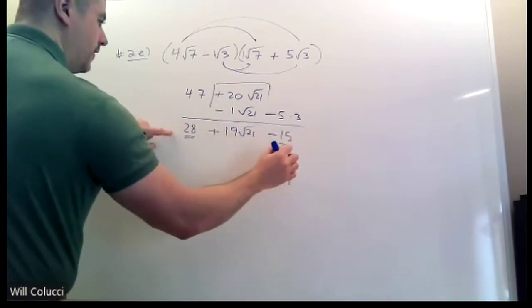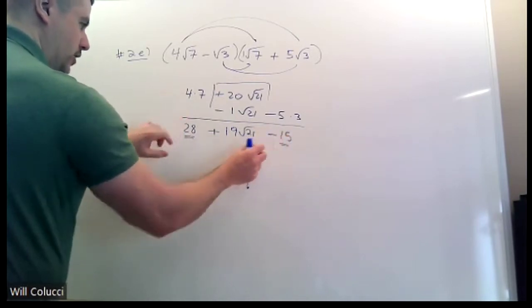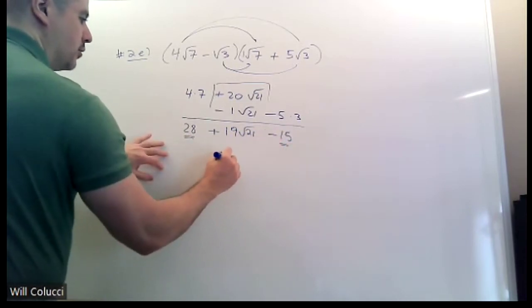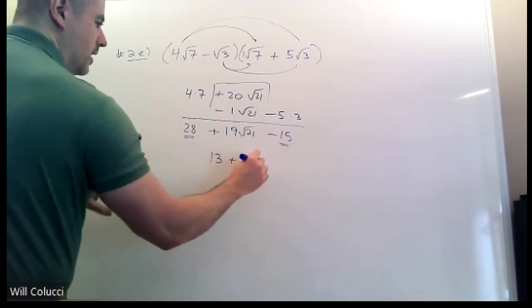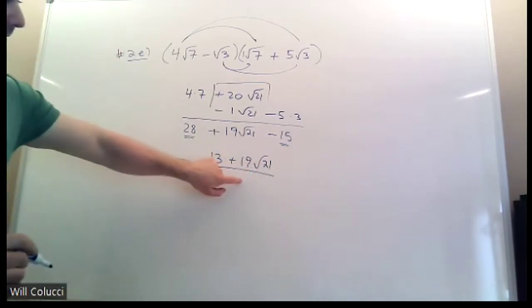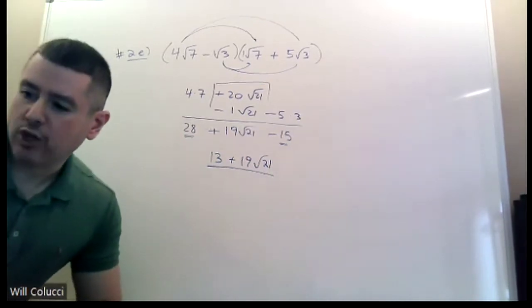Now just do 28, take away 15. Why can you subtract them? Because they're just regular numbers. They don't have radicals. They don't have anything. These are the same creature. This is $28 and you spend $15. That gives you 13. The 19 radical 21 just goes along to the right. Again, cannot add them because this does not have a radical 21. So they're not like terms.